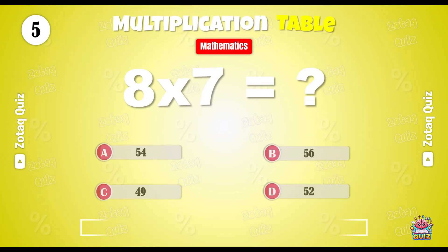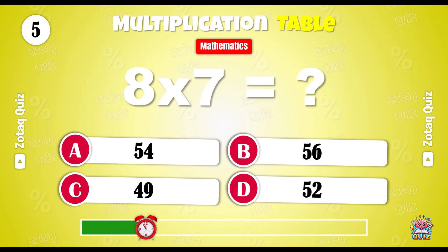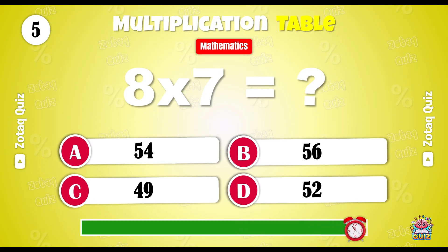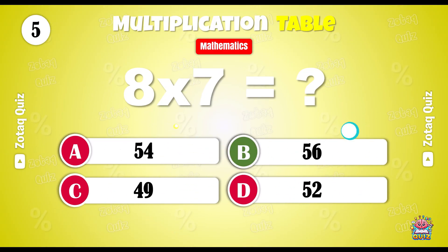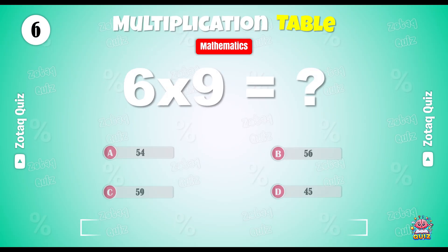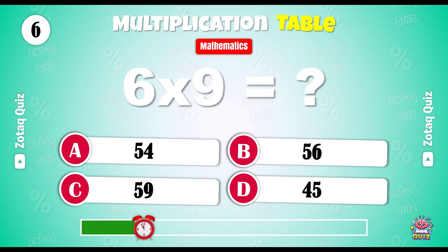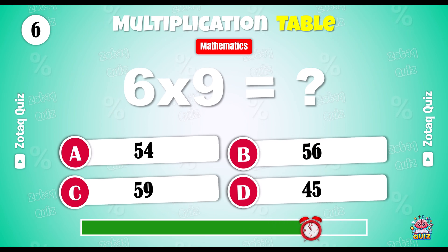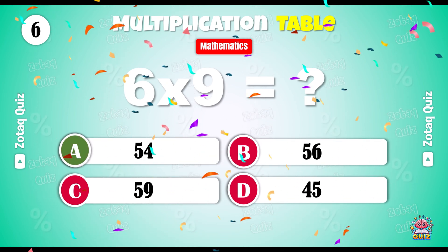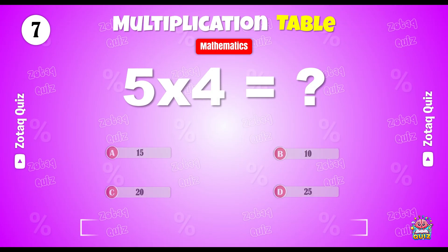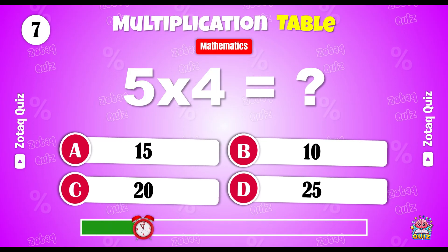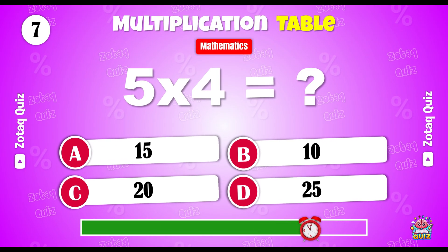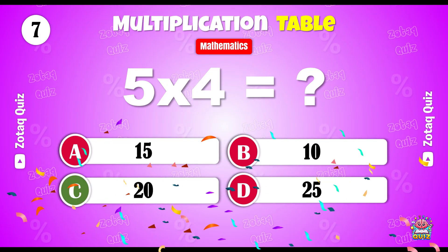What is 8 x 7? The correct answer is 56. Solve this. 6 x 9 is equal to — and the right answer is 54. Think fast. What do you get when you multiply 5 by 4? 20 is the right answer.